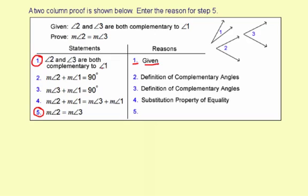Angle 2 and angle 3 are both complementary to angle 1. That is given. Measure of angle 2 plus measure of angle 1 is 90 degrees. Well, that's true because angle 2 is complementary to angle 1, which means the measures add to 90 degrees. And that's based on the definition of complementary angles, which says two angles are complementary if and only if their sum is 90 degrees.